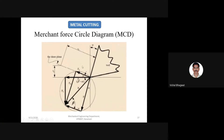The Merchant force circle diagram: superimposing the three force vectors gives shear force Fs at angle phi, thrust force Ft, friction force F, normal force N, with beta as the friction angle and alpha as the rake angle. Since the rake angle and the complementary region total 90 degrees, you have 90 minus alpha there, making the total angle between friction and cutting force equal to beta minus alpha.